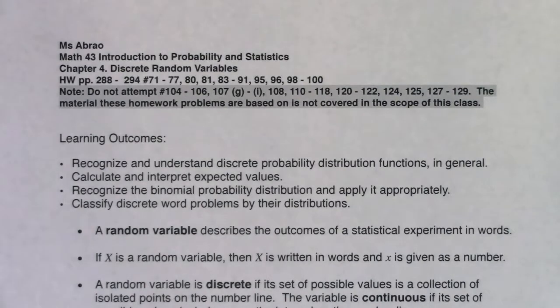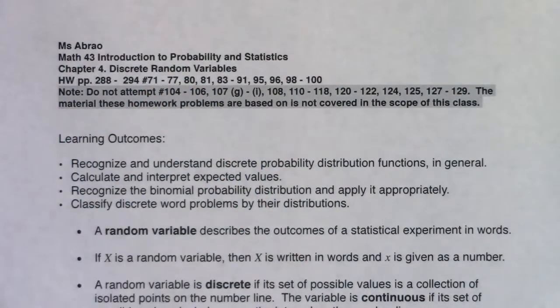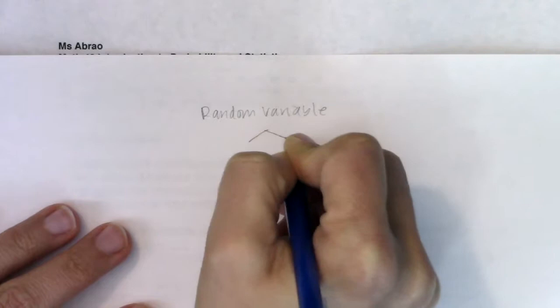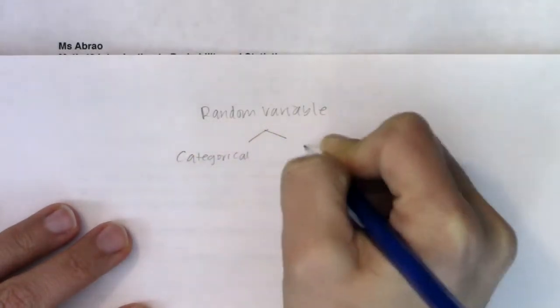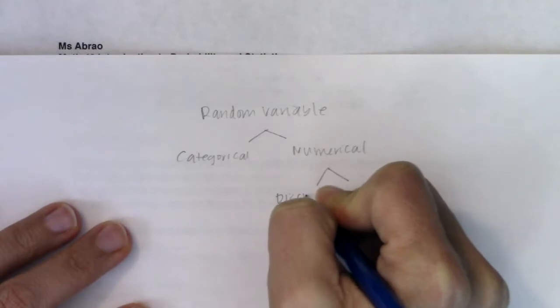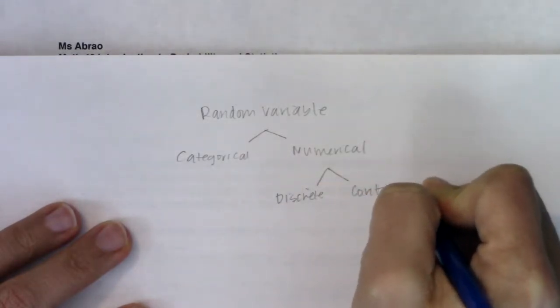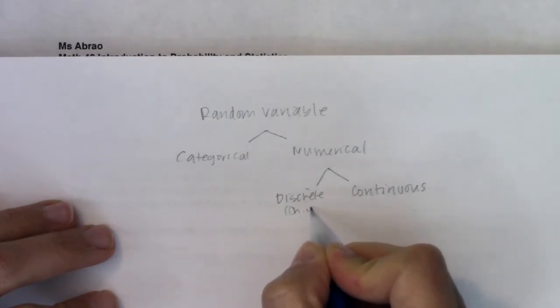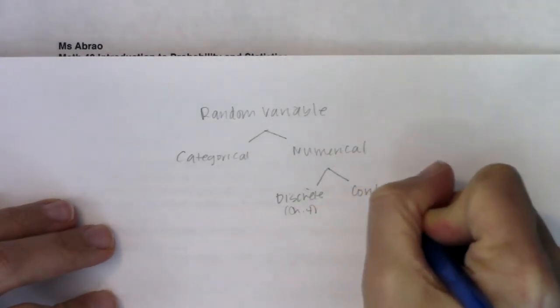Hey, Math 43. Let's start in on chapter 4. We're going to learn about discrete random variables in this chapter. If you remember, that was a vocab term from way back in chapter 1. Any random variable can be broken down into categorical or numerical, and then numerical breaks down further into discrete and continuous. This layout is where the next few chapters take us. We'll spend some time in discrete land in chapter 4, and in continuous land in chapters 5 and 6.